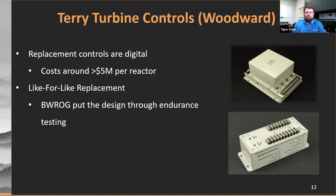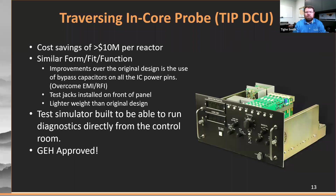We're going to continue with another project example: a traversing in-core probe system drawer. This is a drawer that controls the movement of a little fission chamber on a cable. The system has a little gearbox that pushes the cable up through the reactor, and that fission chamber helps calibrate the internal fission chambers — the LPRMs — that are inside of a boiling water reactor.